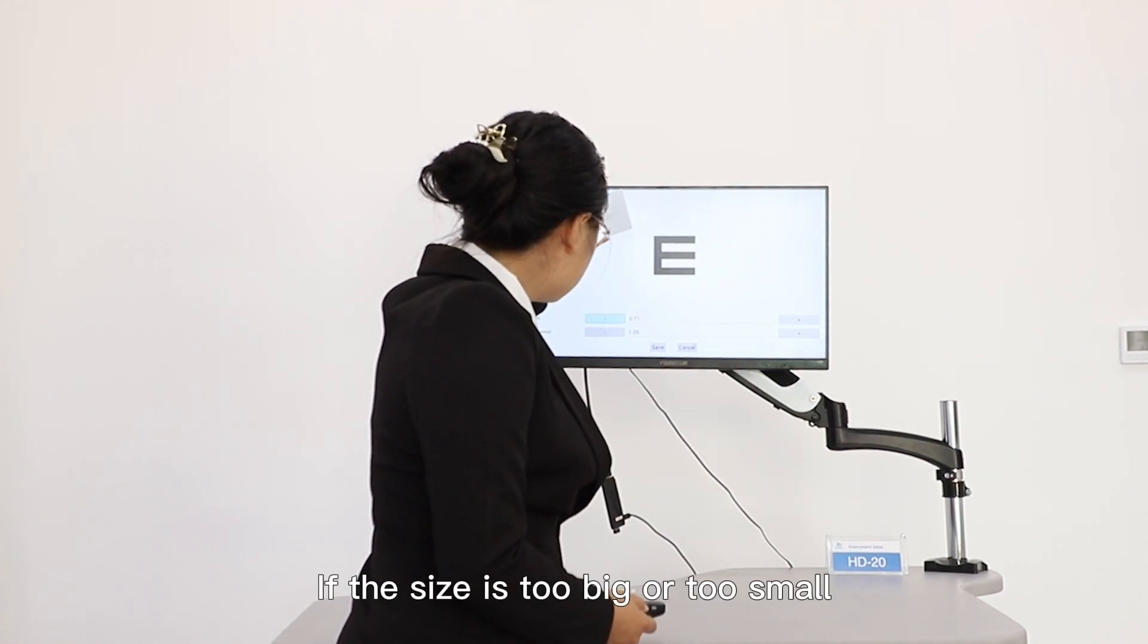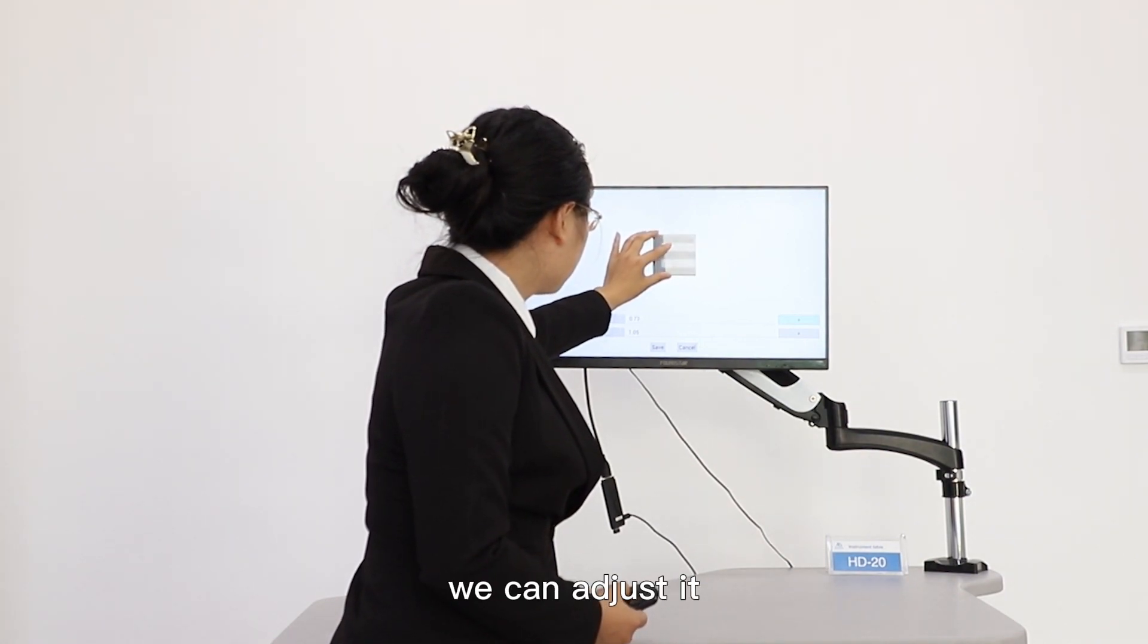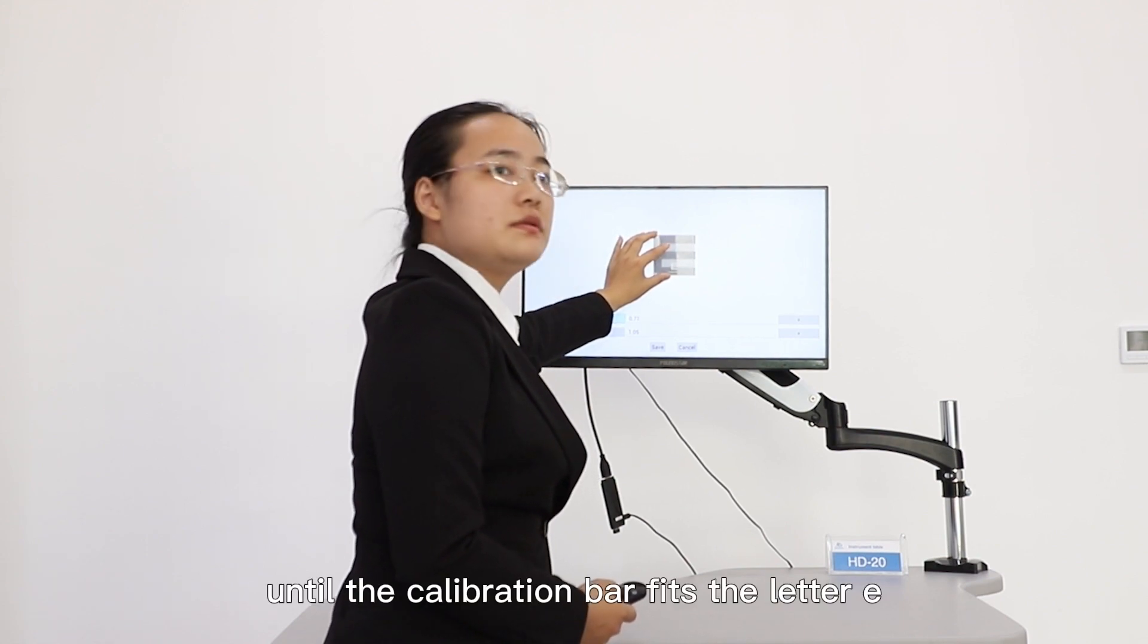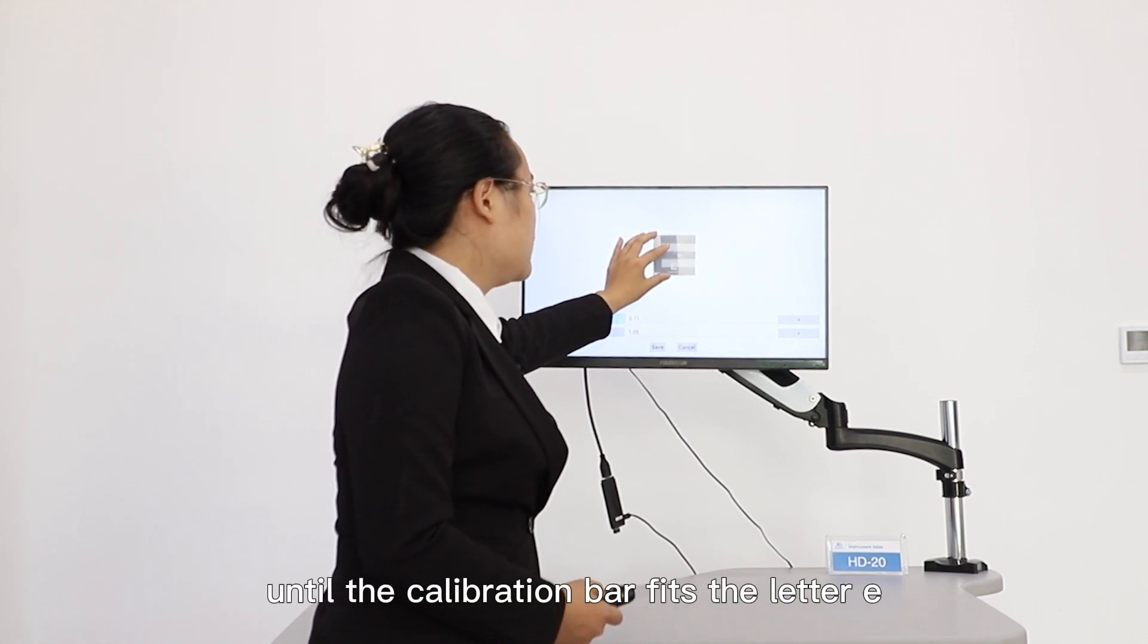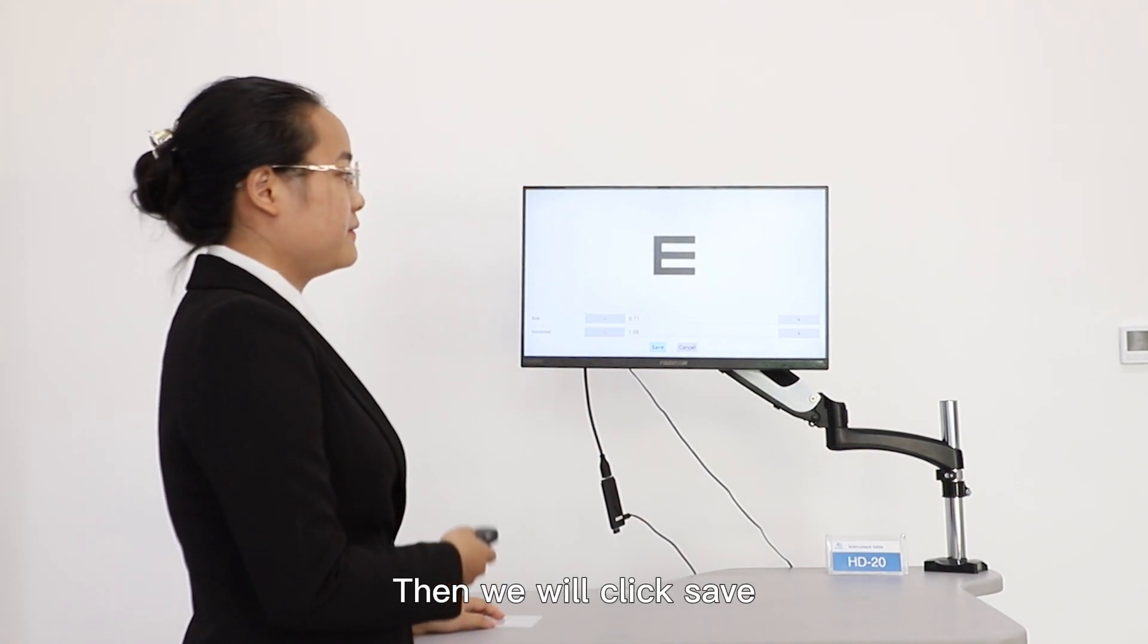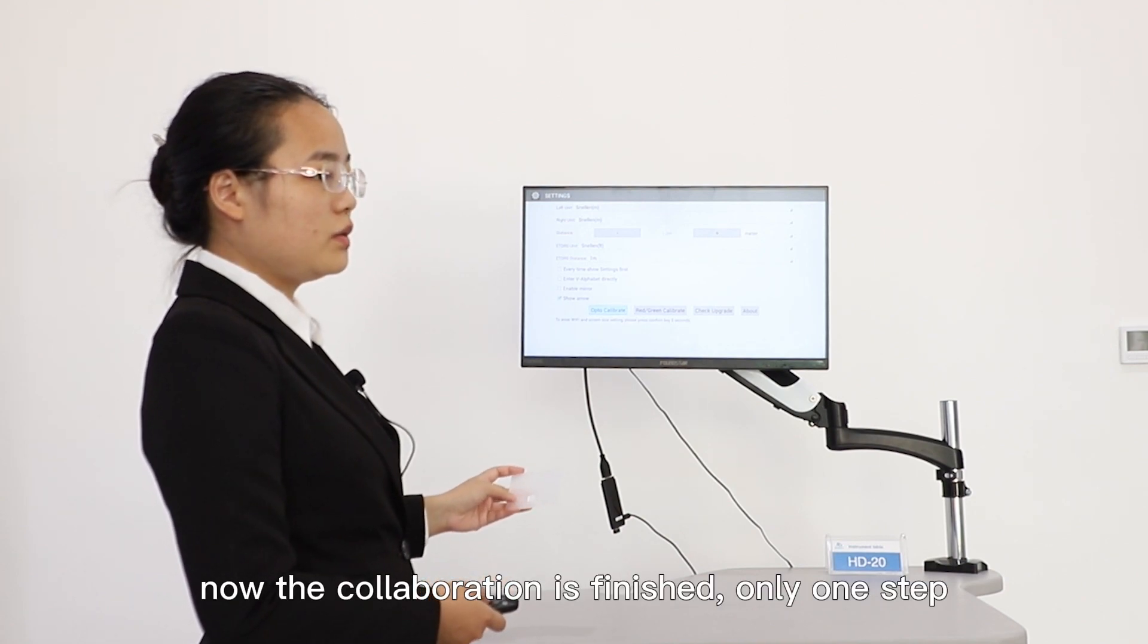If the size is too big or too small, we can adjust it until the calibration bar fits the letter E. Then we will click save. Now the calibration is finished. Only one step.